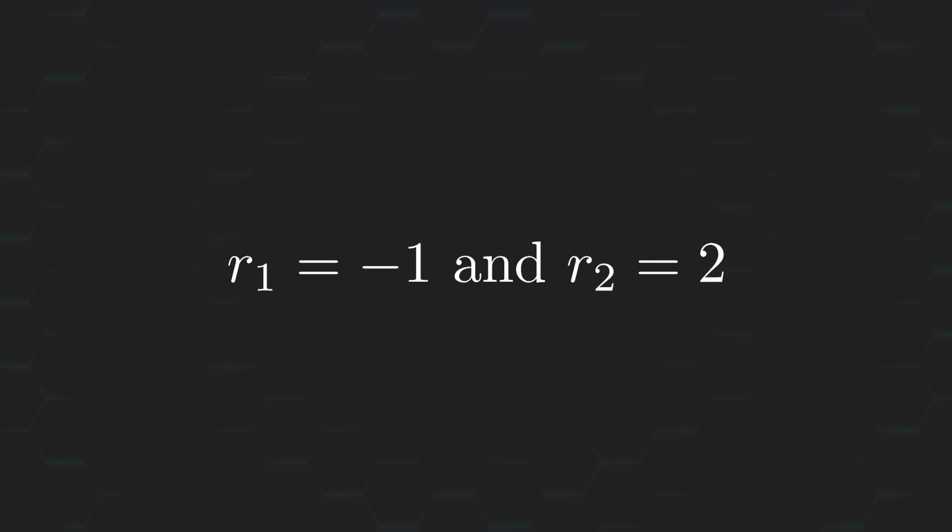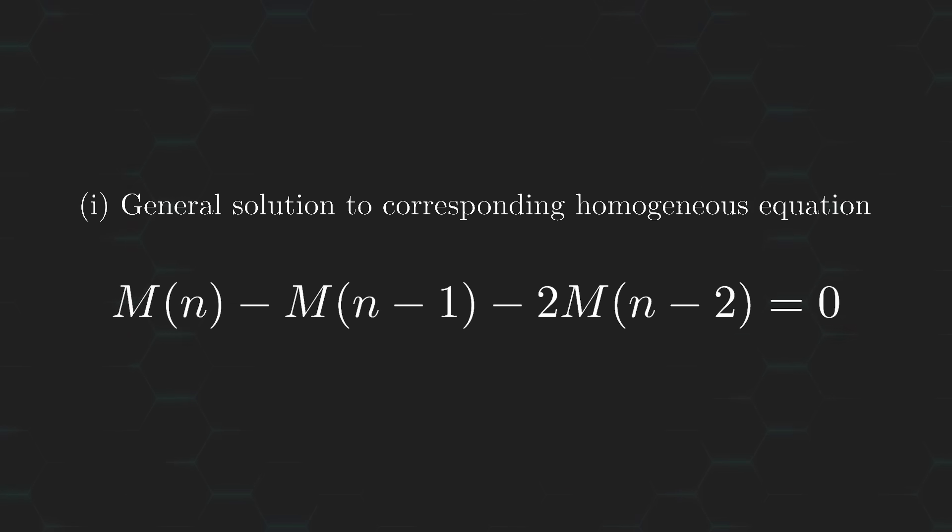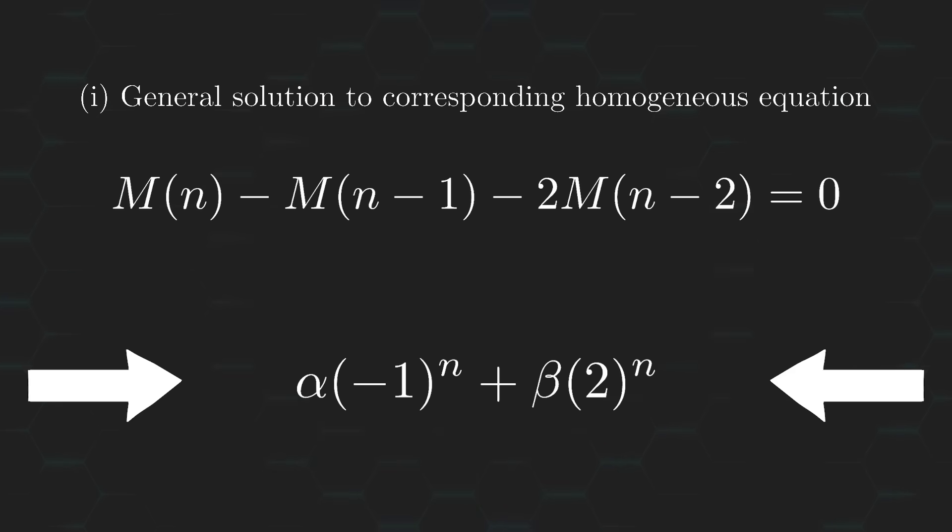Now, the characteristic equation is just a quadratic equation with the same coefficients as the recurrence relation. And we can easily solve for the roots of this characteristic equation by using our trusty quadratic formula. Okay, so our roots are negative one and two, which are real and distinct, and so they must fall under case number one. Meaning, the general solution to our homogeneous recurrence equation must take on the following form, where alpha and beta are two arbitrary real constants. Now we will determine the value of these constants, but let's hold off on that just for now.